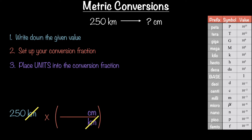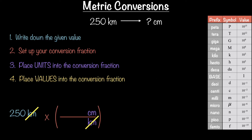We do this so that the unit we started with — kilometers — will cancel, leaving us with the unit we desire: centimeters. Step four: place the values from the metric table into the conversion fraction. According to the metric table, the kilo prefix has a value of 10 to the positive 3, and the centi prefix has a value of 10 to the minus 2.